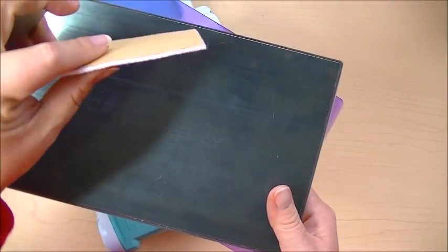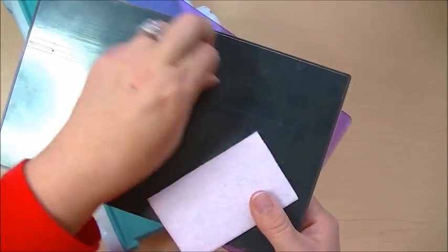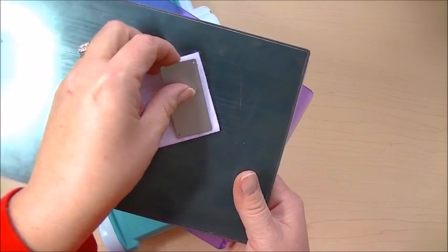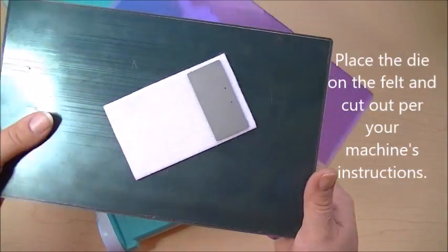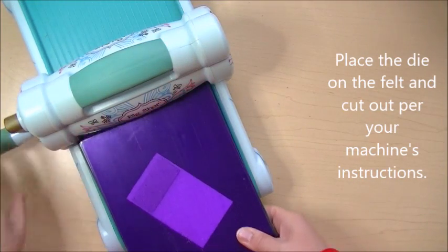Now this white felt is the premium felt. It's much thicker than the other felt that I showed you, the red one and the one that I cut the mittens out of. I'm just going to put our die on here and make our sandwich like our machine tells us to do, and crank this through.